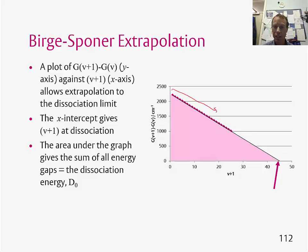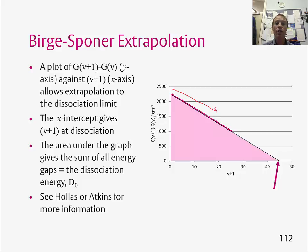So by measuring an electronic spectrum and analysing the peaks, you can get the dissociation energy — this is quite incredible and very useful. To find out more about the Birge-Sponer extrapolation, have a look at the texts by Hollis or Atkins, and you can read more about them there.